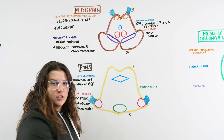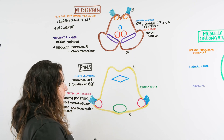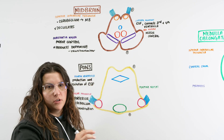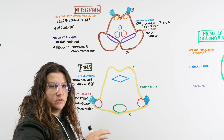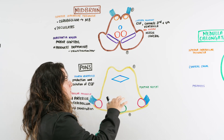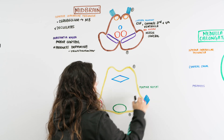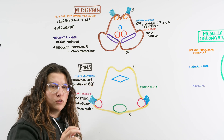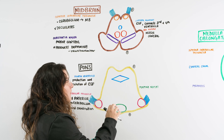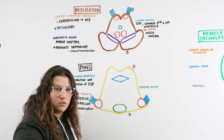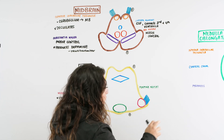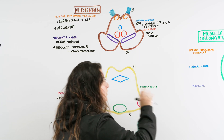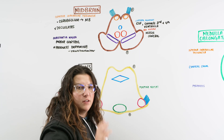Lastly within the pons, we have the pontine nuclei — this bundle of gray matter that allows communication from the cerebral cortex to the cerebellum. It also transmits information about motor coordination, fine-tuning all voluntary movements to make them smooth rather than jagged or tremulous. The pontine nuclei essentially helps control and fine-tune voluntary movement.